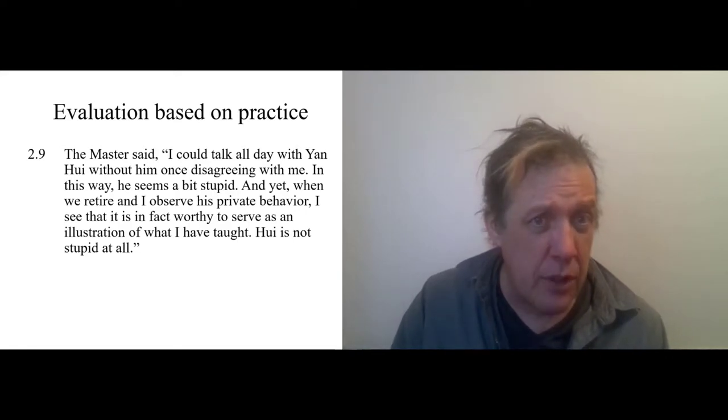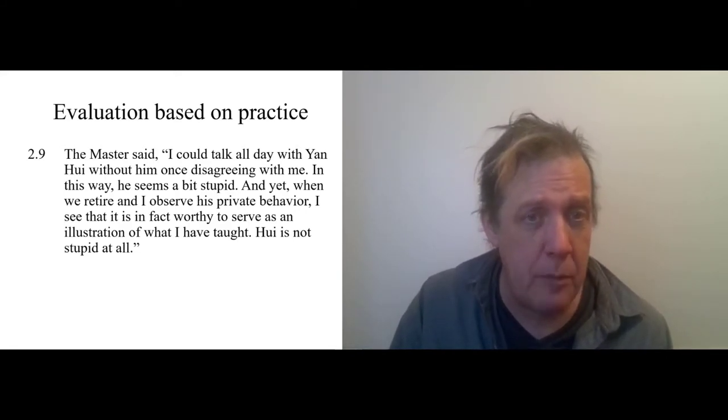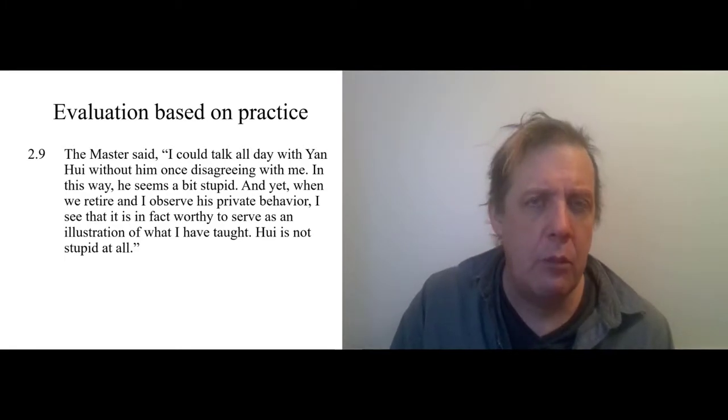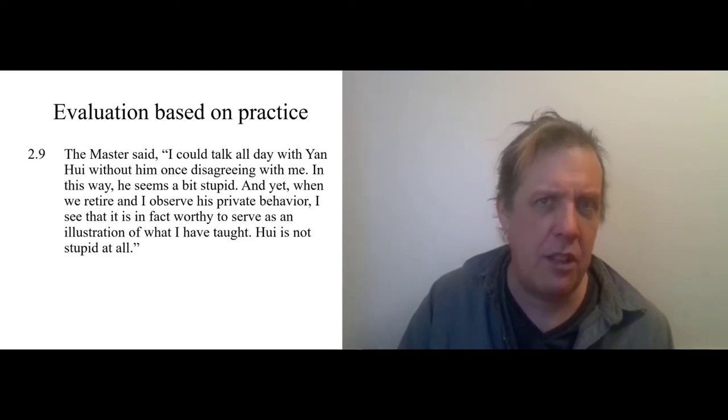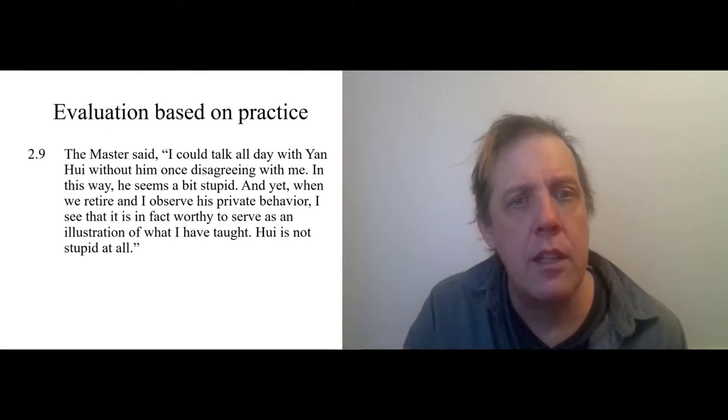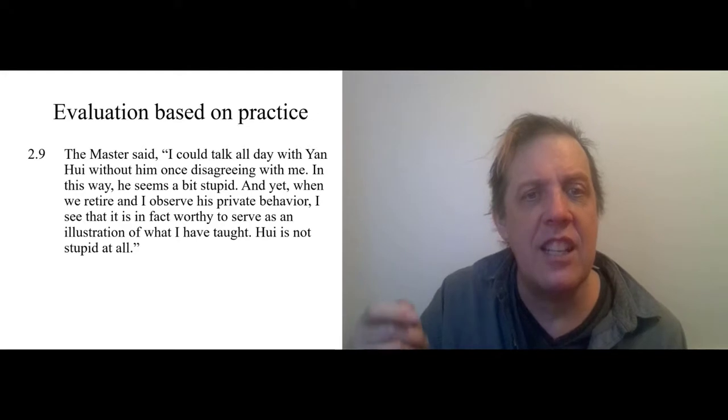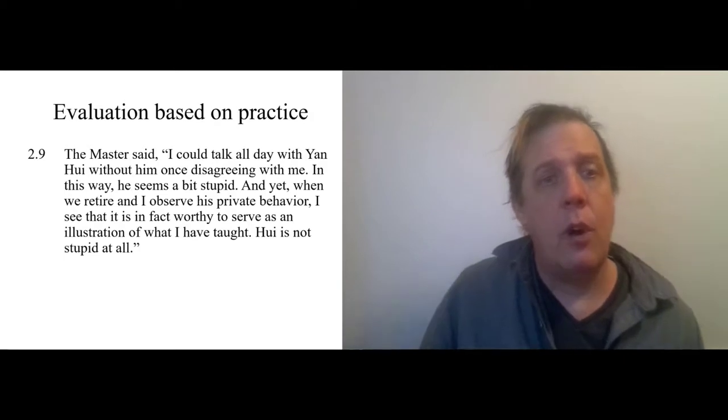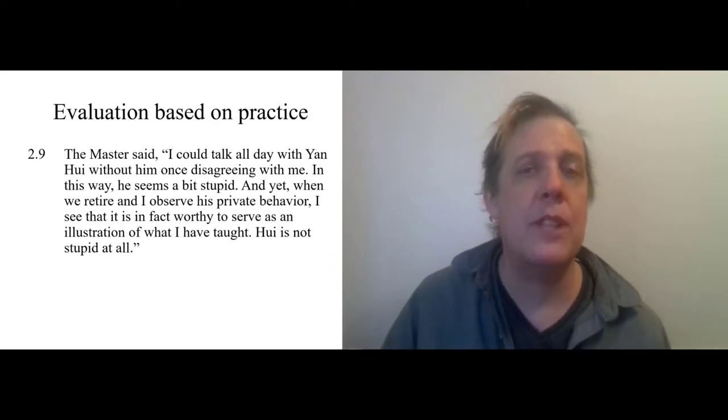I could talk all day with Yan Hui without him once disagreeing with me. In this way, he seems a bit stupid, right? So Confucius thinks, oh, a smart kid would challenge me to show off he's smart. But Yan Hui is even smarter than that. So he goes on to say, and yet, when we retire and I observe his private behavior, I see that he is, in fact, worthy to serve as an illustration of what I have taught. Wei is not stupid at all. Why is he not stupid? Because he can act based on his knowledge.